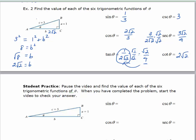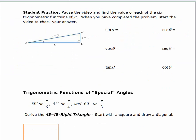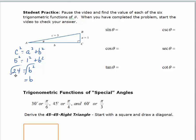I'd like you to pause the video and try the student practice. Make sure you rationalize your answers, then start the video back up to check your work. We're missing b again in this problem. We'll start by writing c squared equals a squared plus b squared. So, 5 squared equals 1 squared plus b squared. B squared equals 25 minus 1, which is 24. Taking the square root of both sides — the answer is positive — this simplifies as 4 times 6, or 2 square roots of 6.